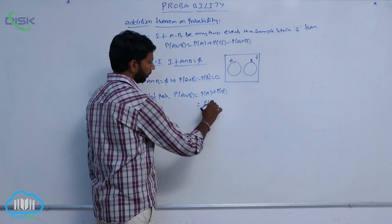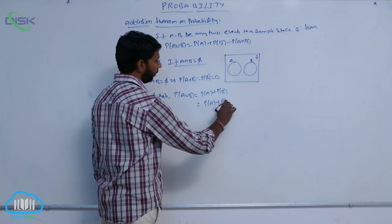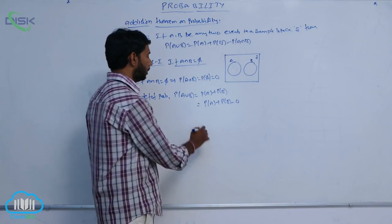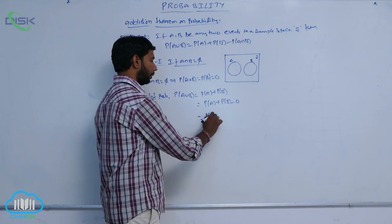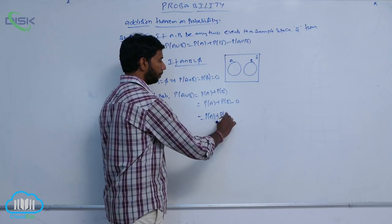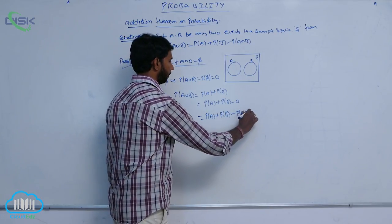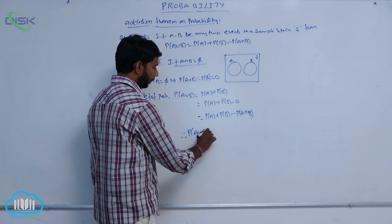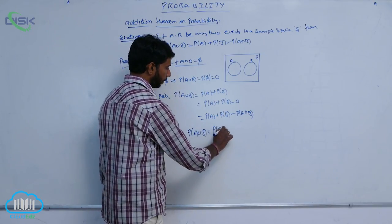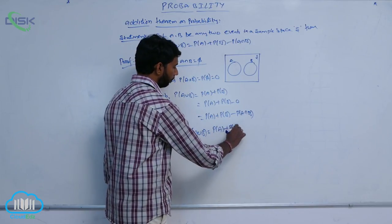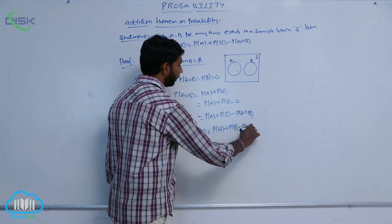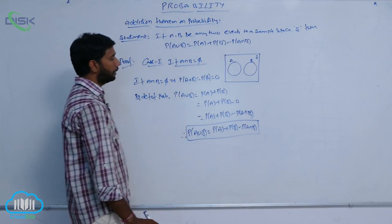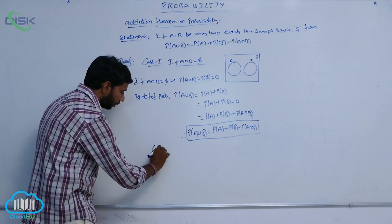This can be written as P of A plus P of B minus 0, which equals P of A plus P of B minus P of A intersection B. Therefore, P of A union B is equal to P of A plus P of B minus P of A intersection B. This is the first case of the addition theorem.